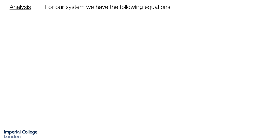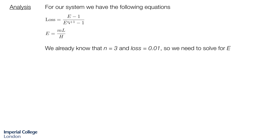To analyse this system we use the following equations. We know that the loss is the ratio of the extraction factor minus 1 over the extraction factor to the power of n plus 1 minus 1, where n is the number of stages. We also know that the extraction factor E is defined as m — our distribution coefficient — multiplied by the ratio of the flow rates. We already know the value of n equals 3 and the loss is 1%, so there's only one unknown in this equation and we can solve for E.